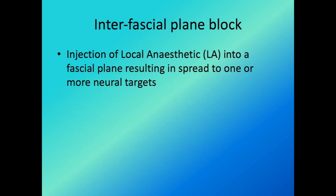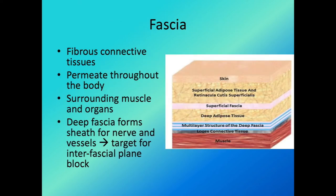An interfascial plane block is simply injecting local anesthetic into a fascial plane, resulting in spread of the LA towards targeted neural targets — the nerves that run through the fascia. The deep fascia surrounding muscle usually has nerves and vascular structures running through it. By injecting local anesthetic into this fascia, it gets carried by muscle movement towards certain nerves, resulting in analgesia, sometimes motor block, sometimes sympathetic block — depending on which nerve the LA acts on.